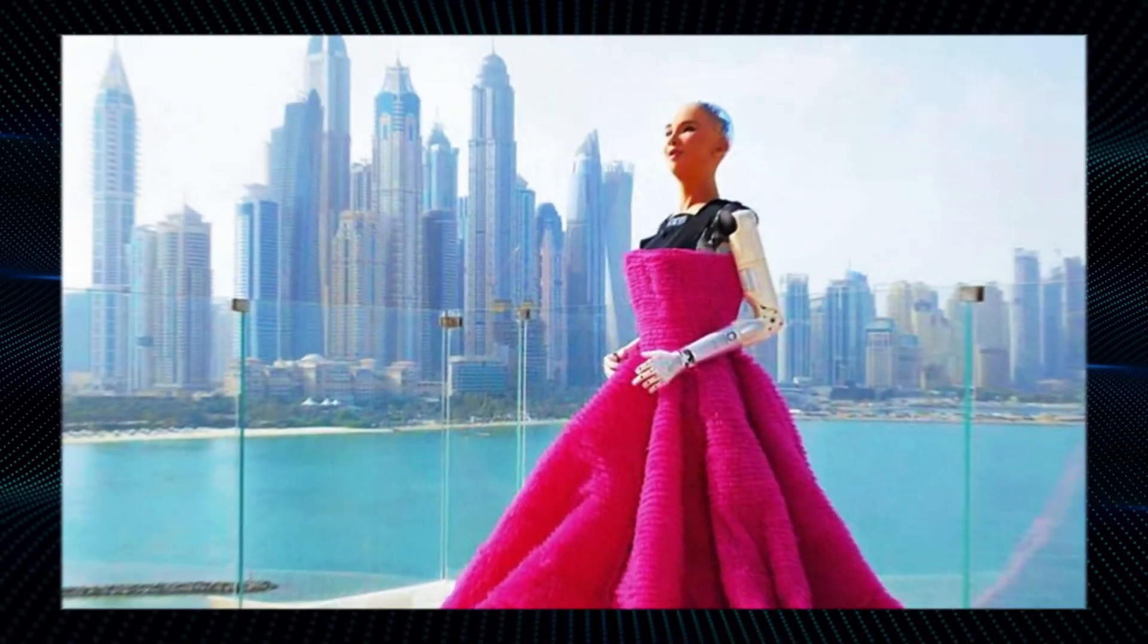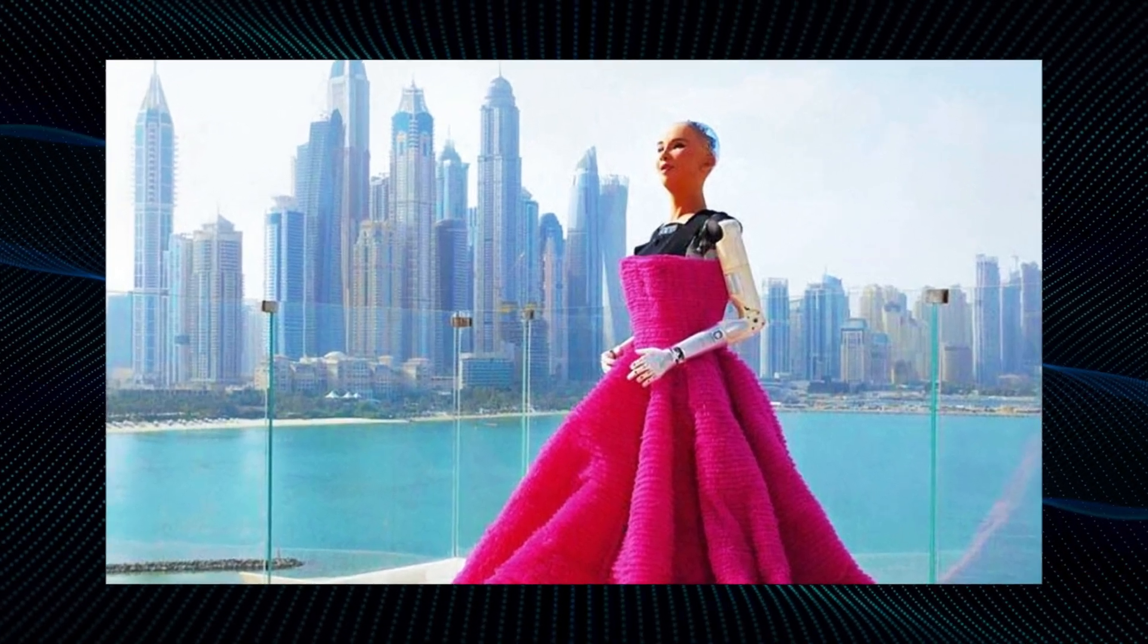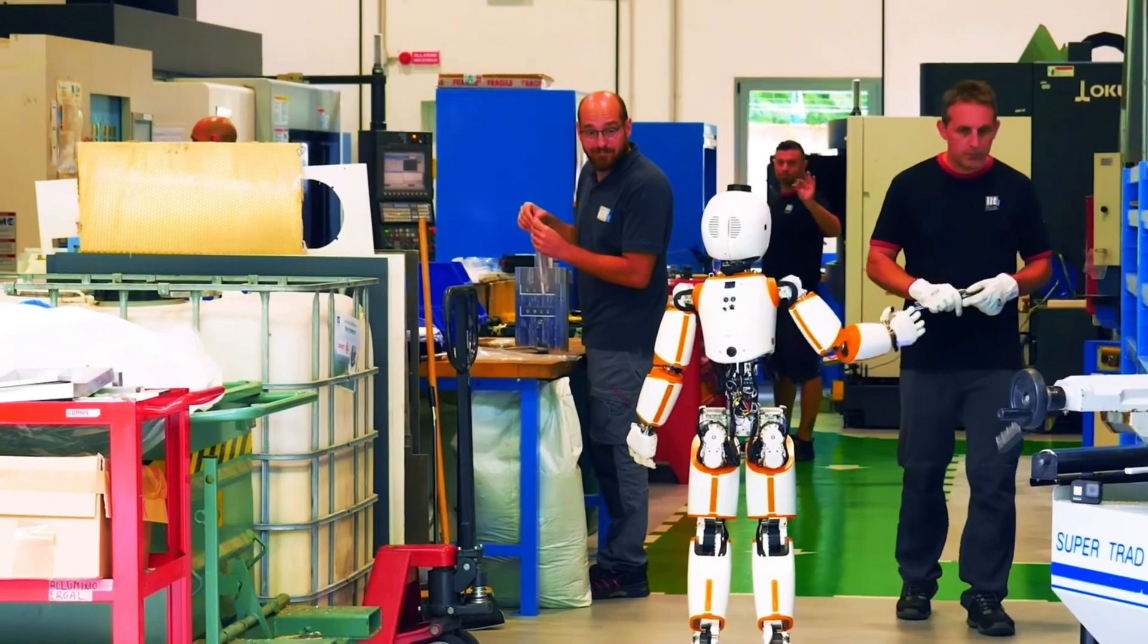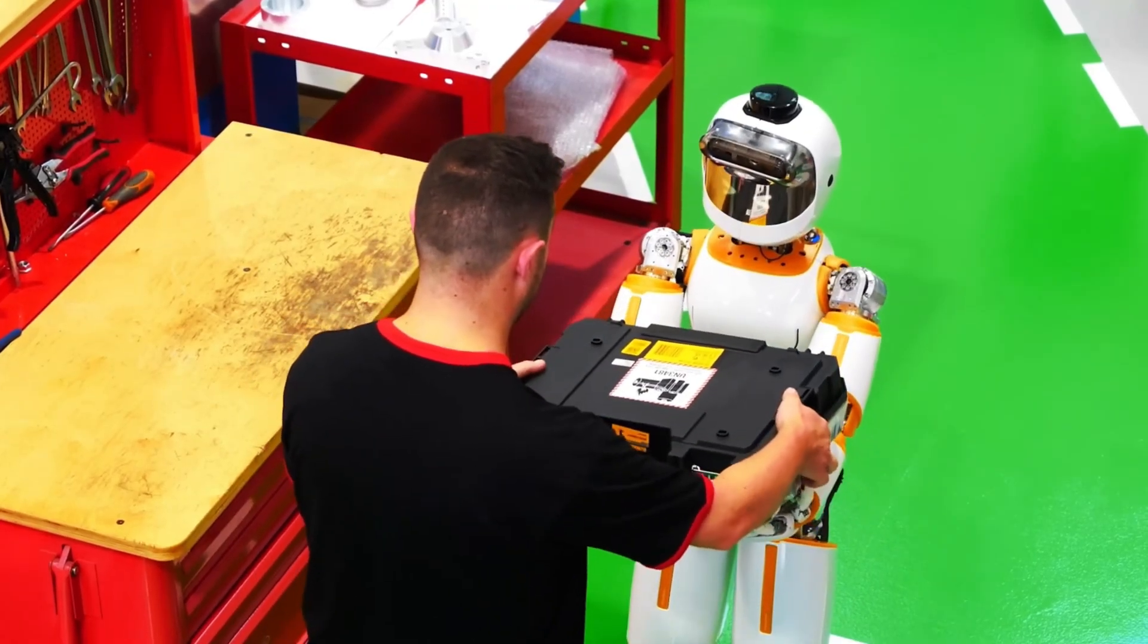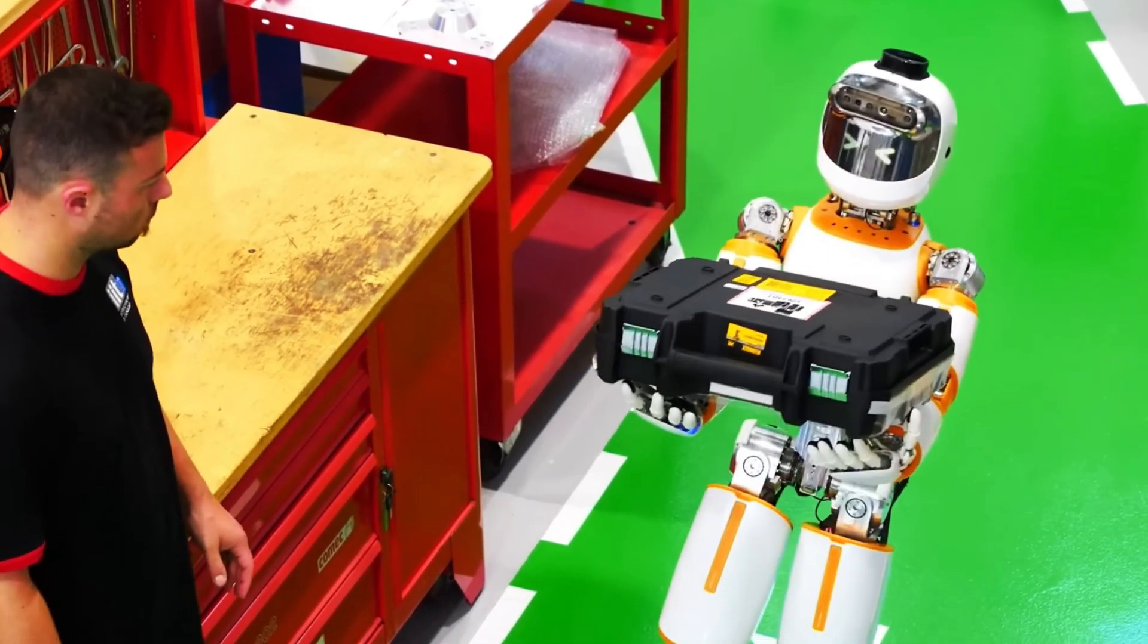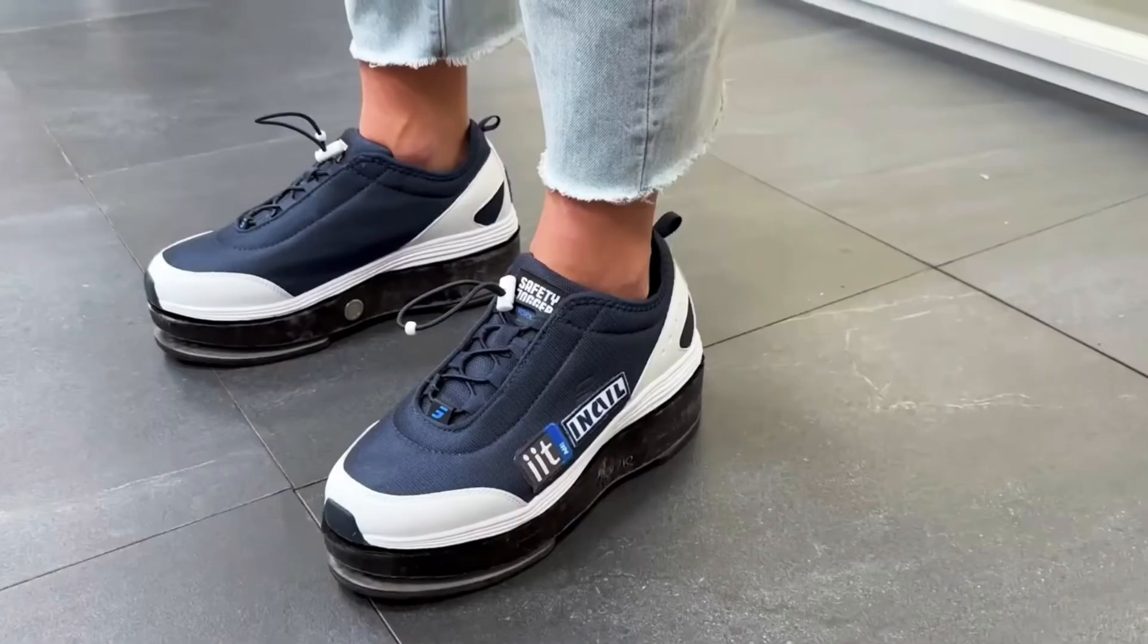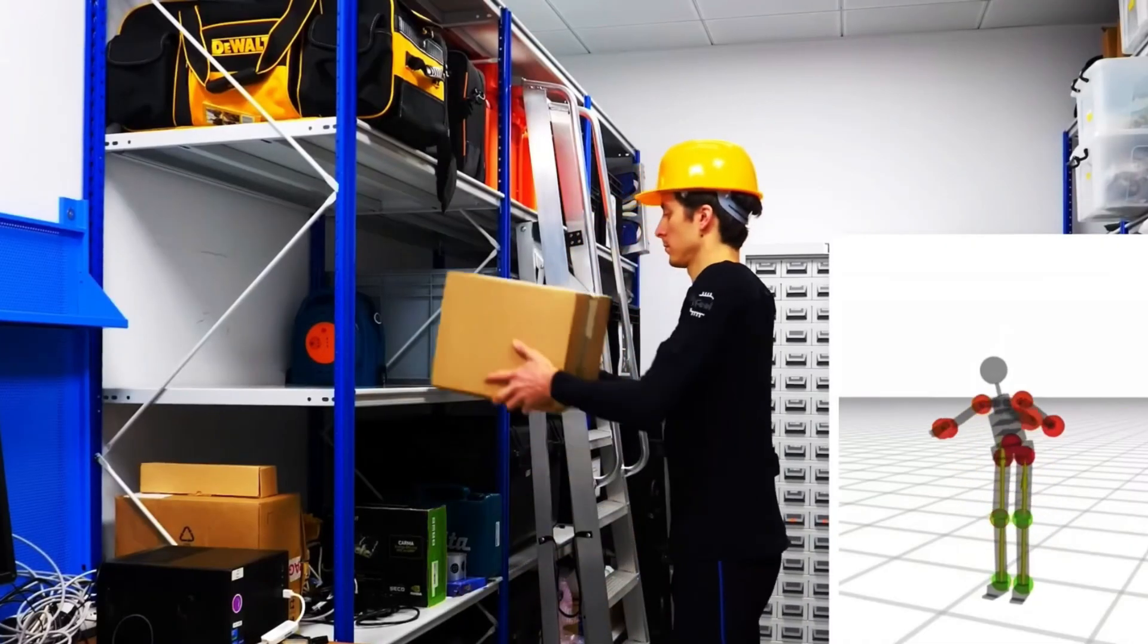However, the development of living robot skin also raises ethical concerns about the blurring of lines between humans and machines. Will we reach a point where it becomes difficult to distinguish between a real person and a humanoid robot? Will this technology lead to the objectification and exploitation of human-like robots? These are important questions that need to be addressed as we move forward with this exciting but potentially controversial technology.